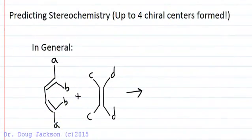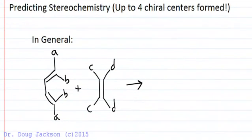So predicting the stereochemistry, well with the Diels-Alder reaction we can form up to four chiral centers. So that's ridiculous that we can go from achiral to four chiral centers in one single chiral transformation. And there are rules governing the stereochemistry for this reaction.